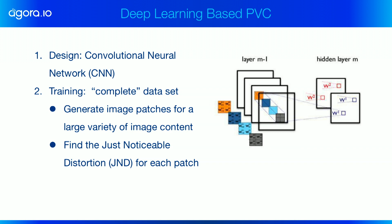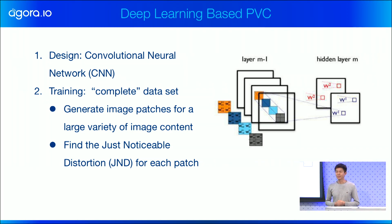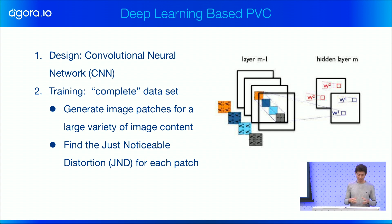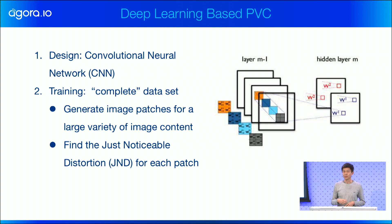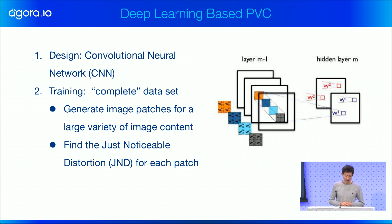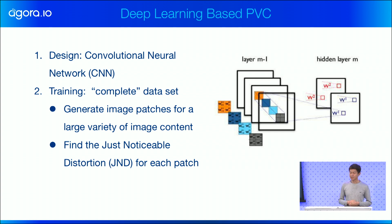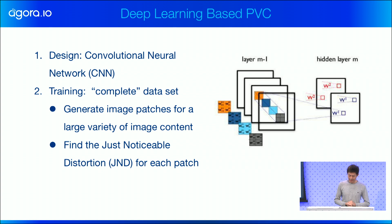In our design, we simply adopt a convolutional neural network, and it turns out a very simple architecture with a few layers of convolutional blocks actually works — which is great for mobile applications. We eventually implemented all our models on cell phones and laptops, benefiting from this simplicity of architecture. The hard part is actually the training — it's about the training dataset. We generate a huge number of image patches, and preferably those patches represent all the interesting content. For each patch we find the just noticeable distortion, and use this labeled data to train the network.